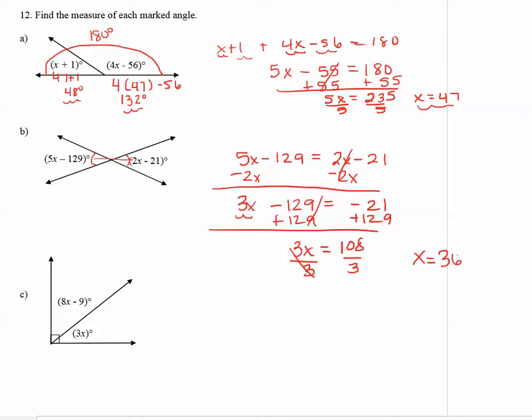Again it's not 36 degrees. That's just the answer for x. So to find the measure of each angle, you have to substitute x into those expressions. So the first expression is 5 times x minus 129. So that would be 5 times 36 minus 129. 5 times 36 minus 129 is equal to 51 degrees.